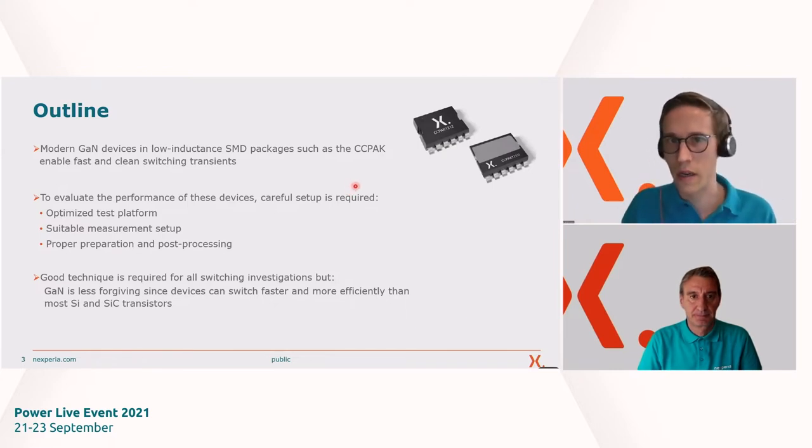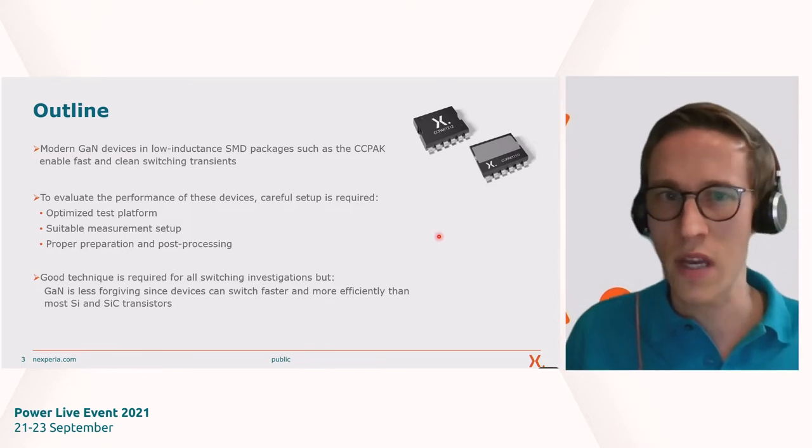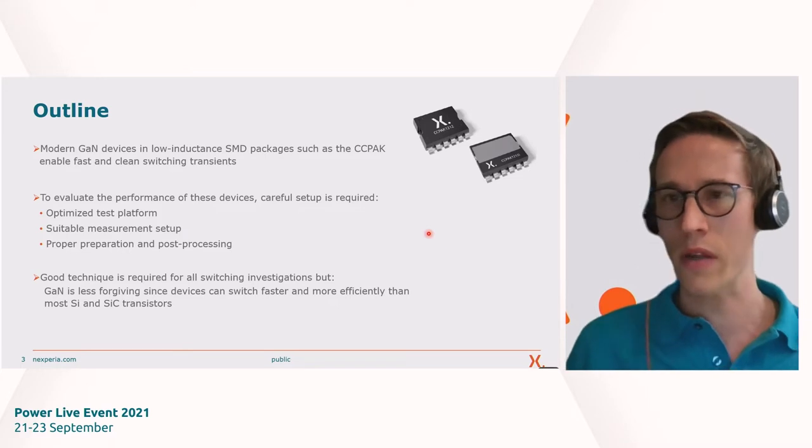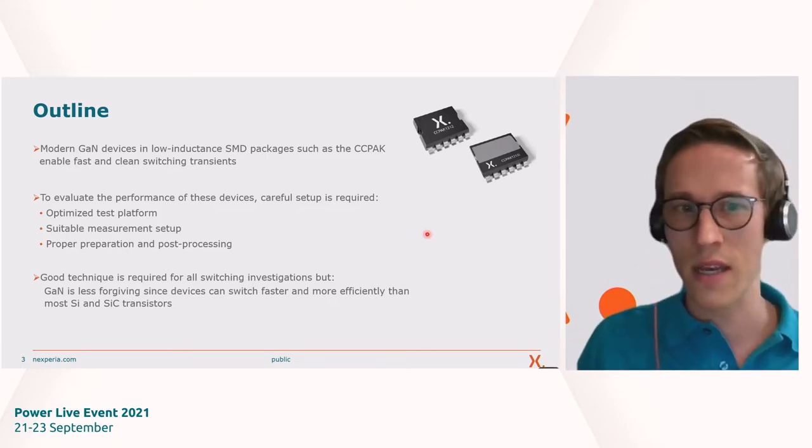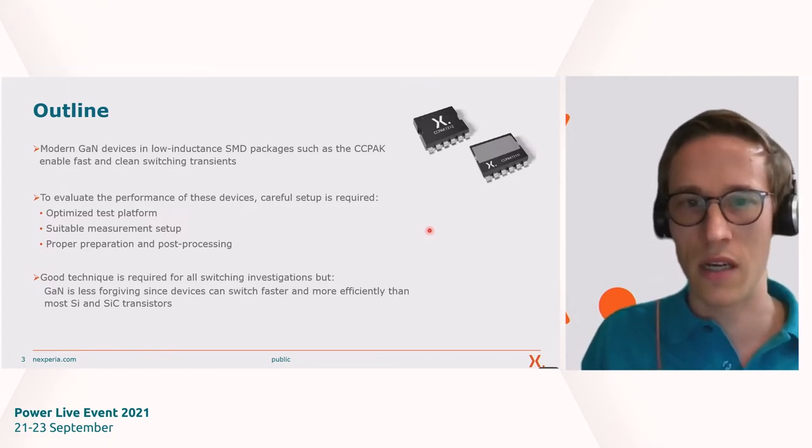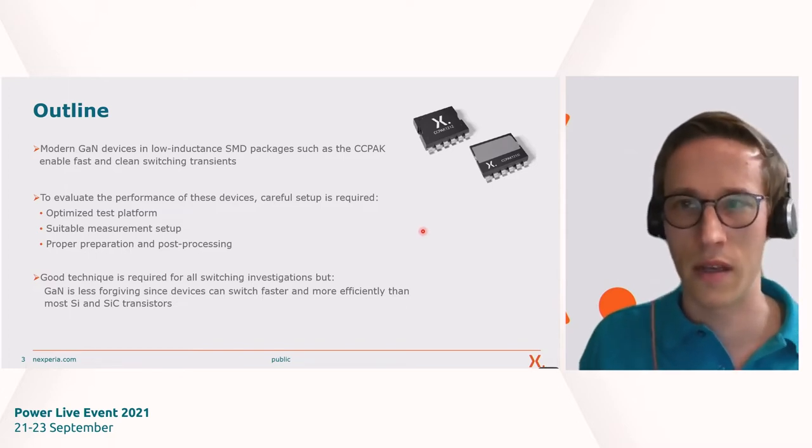Modern GaN devices in low inductance SMD packages such as the CCPAC that you can see on the right-hand side enable very fast and clean switching transients. Now to benchmark these and capture what's really going on, we need an optimized test platform, a suitable measurement setup and proper preparation and post-processing to really see what is exactly going on and what are the results, for example, of the switching analysis. In general, good technique is required for all switching investigations, but it's even more mandatory to follow the basic guidelines for GaN since these devices can usually switch faster and more efficiently than most silicon and silicon carbide transistors.